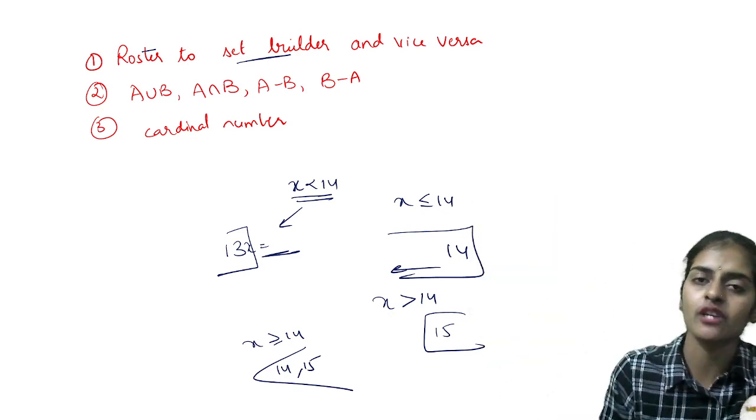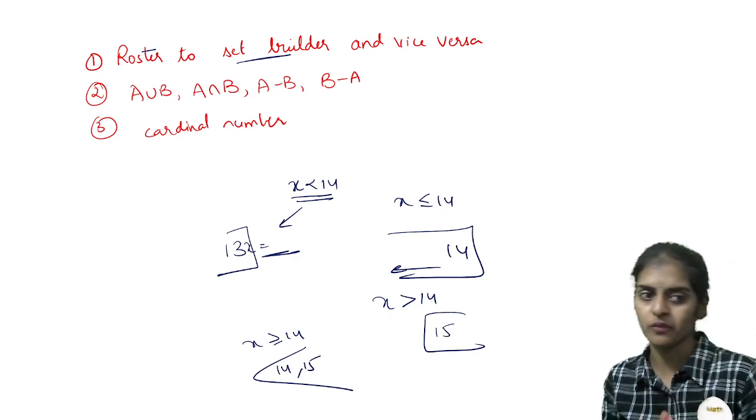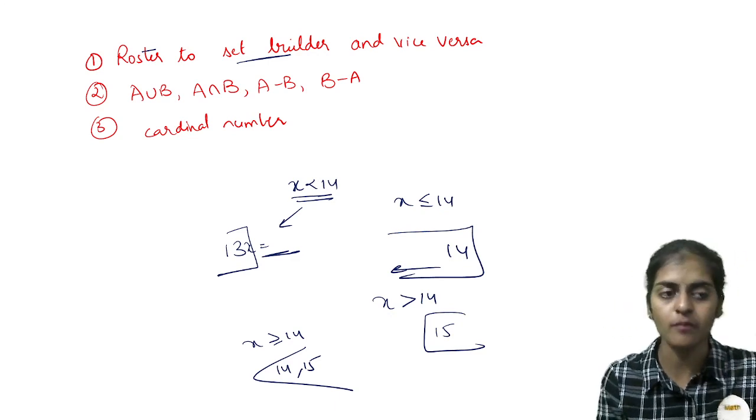So simple things which everyone has to understand. Where are we stopping at what value? So these are about set builder form and roster form.